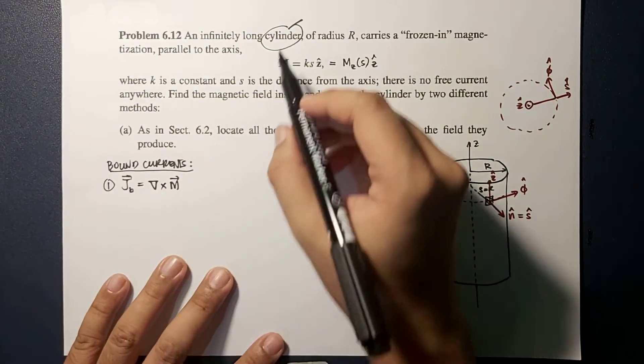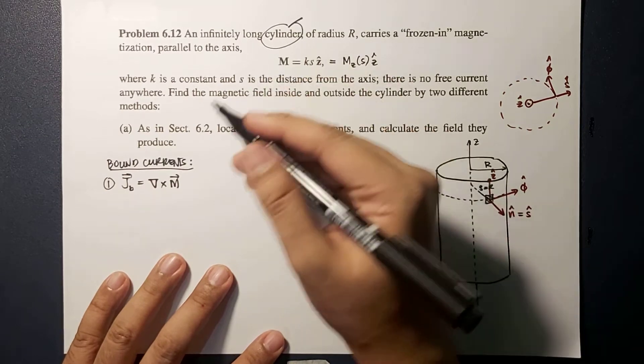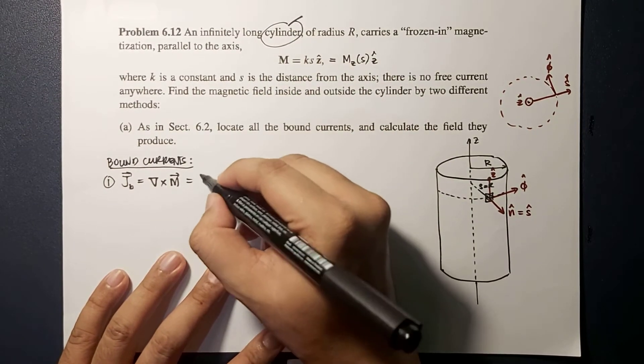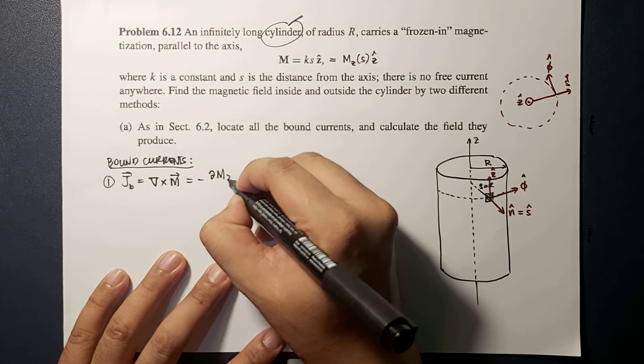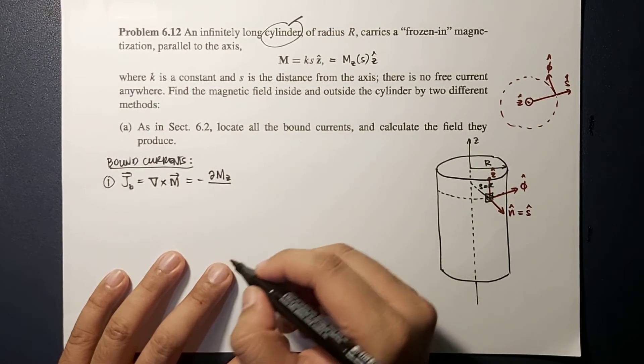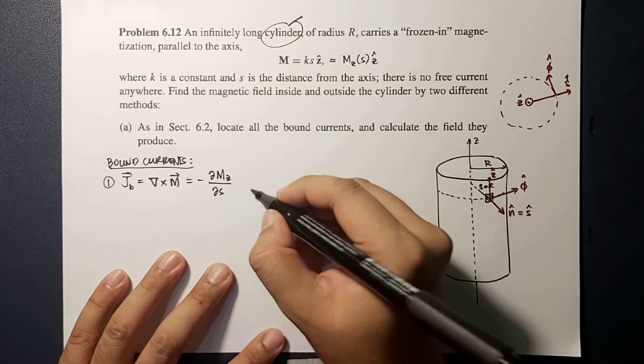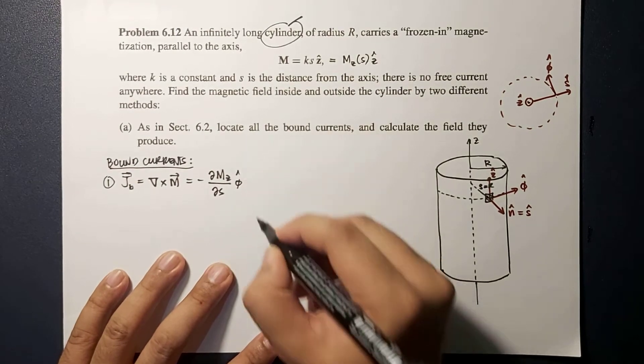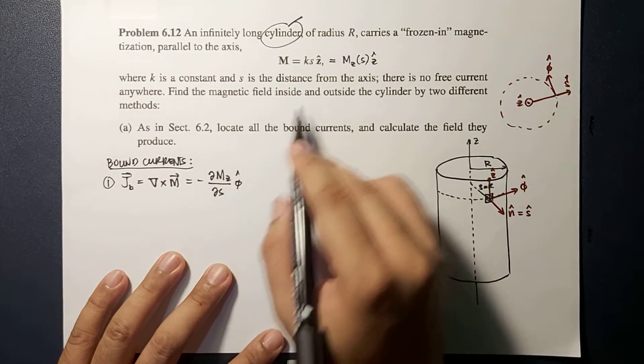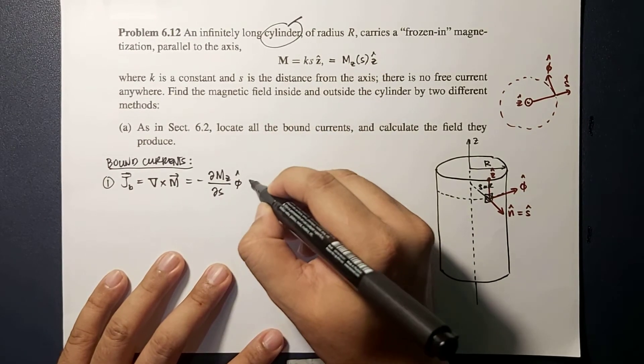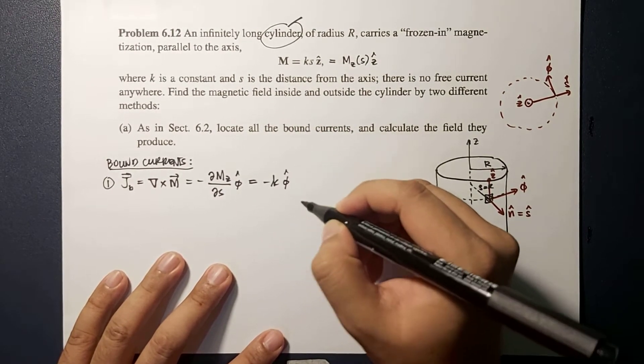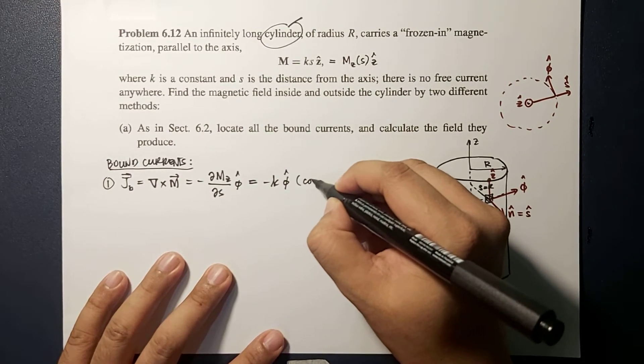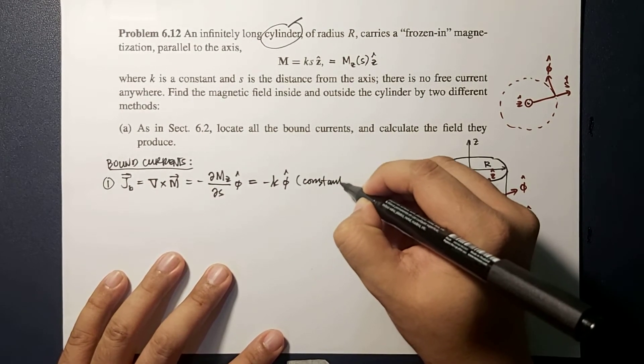The curl for the cylindrical coordinate system will now be reduced to negative derivative of your M along the Z axis with respect to S φ hat. So following this, we now have negative K φ hat. As you will notice this is a constant.